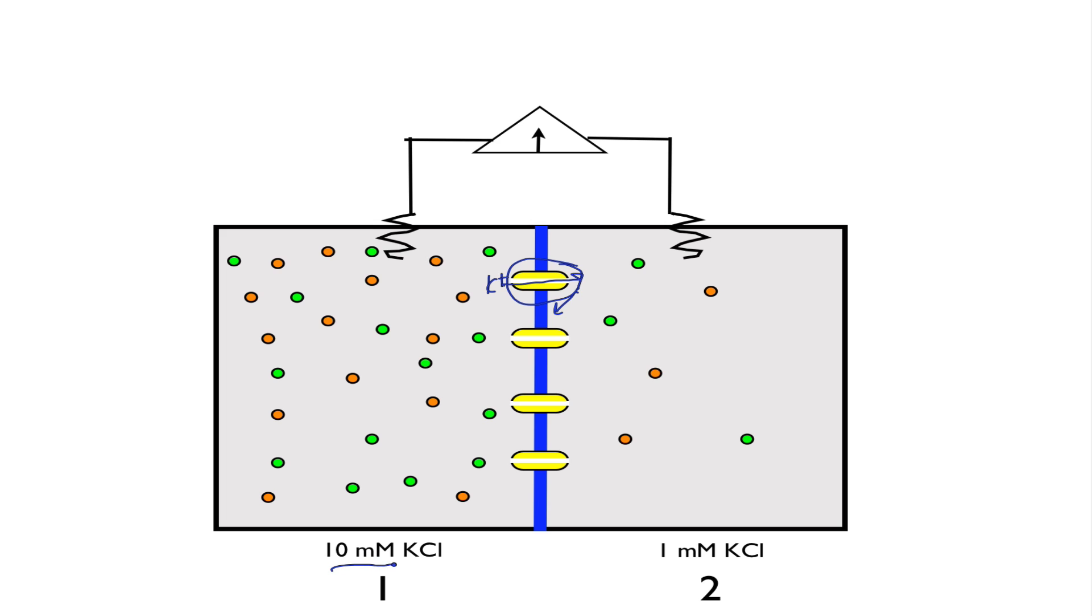And in compartment two, we have 1 millimolar potassium chloride. If you look at the top, you can also see a voltmeter. Compartment two is set as the reference, and so what's being measured here is the electrical potential of compartment one relative to compartment two. So with these initial conditions, there is no membrane potential because there's not yet any separation of charge. And so the membrane potential is equal to zero millivolts.